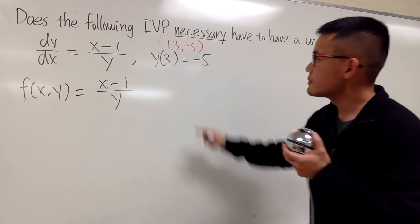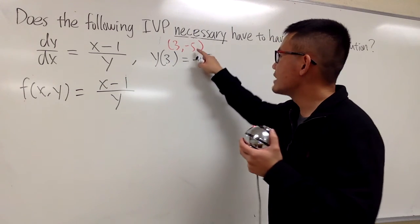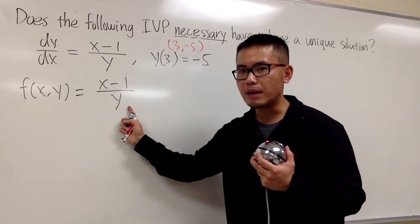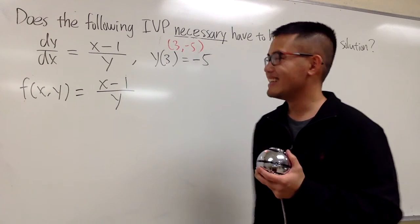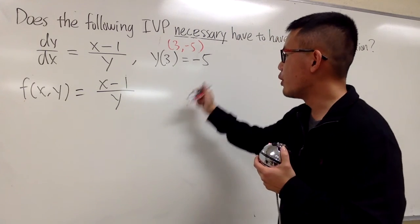And let's do this real quick. When you plug in 3 into here, 3 minus 2, works. This time, when you plug in -5 into the denominator, it's good too, right? All in all, this is continuous around this point.